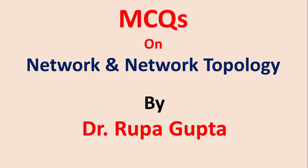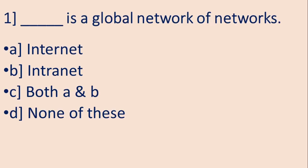Hello friends, I am Dr. Rupa Gupta. In today's video, I am going to explain multiple choice questions on network and network topology. So the first question is: blank is a global network of networks. Option A is Internet, B is Intranet, C is Both A and B, and D is None of these. So the correct answer is A, Internet.